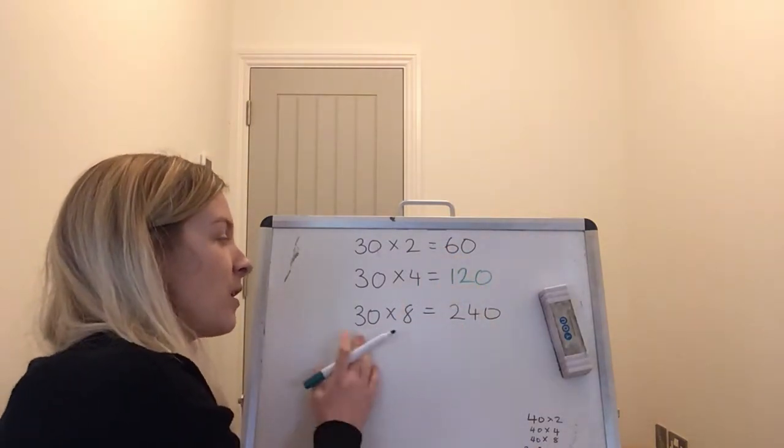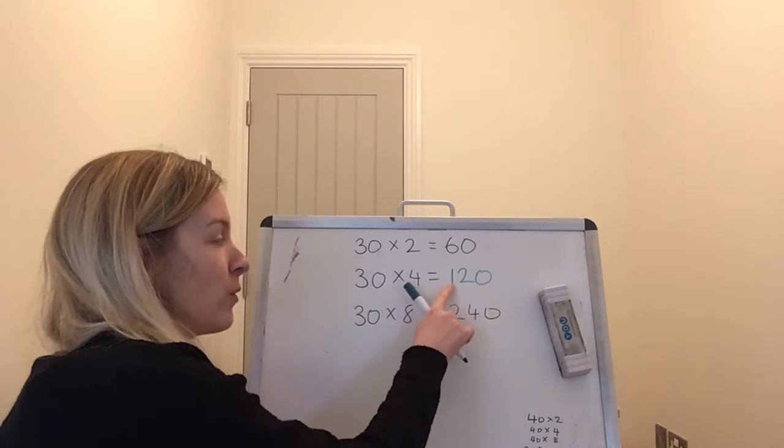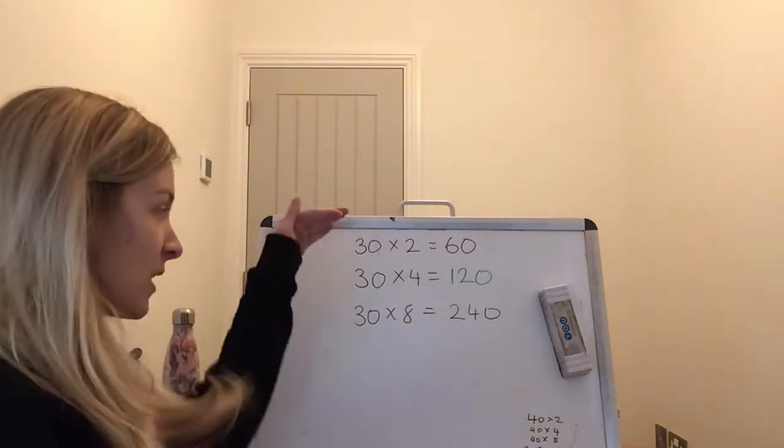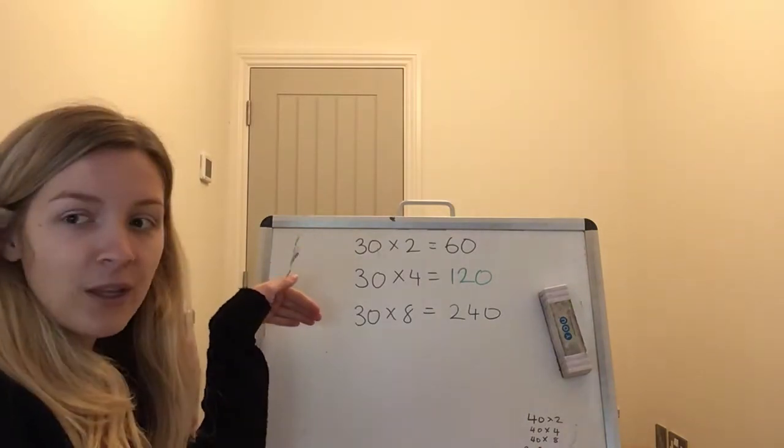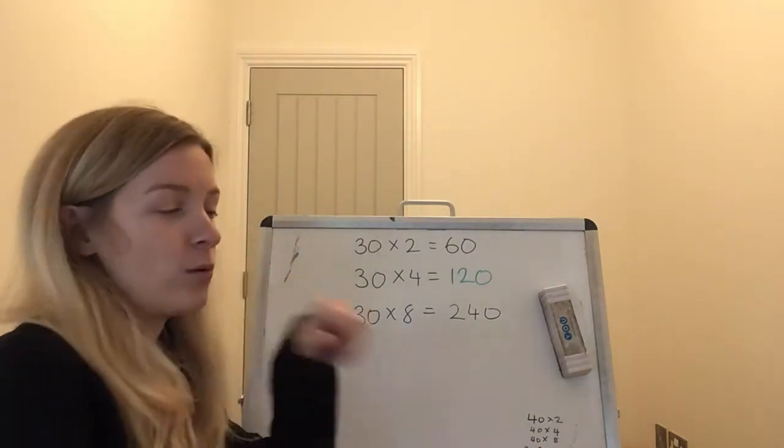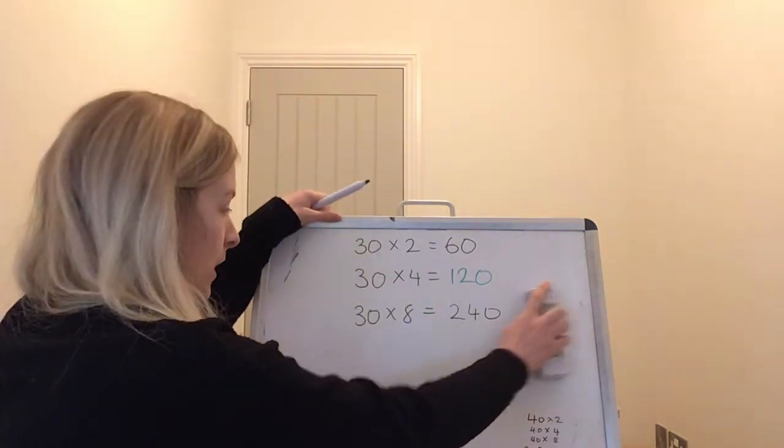And then 30 times 8 is again double 240. See that rule, double it and double it again. If you know your 2's, double it and double it again and you'll be able to know your 8's. So your turn.